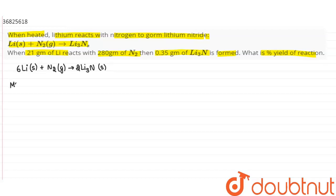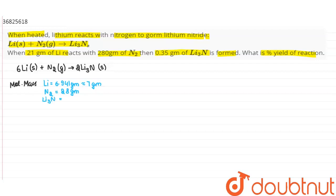We will write all the molecular weights. Lithium: 6.941g, approximately 7g. N₂: 28g. And lithium nitride: 34.83g.